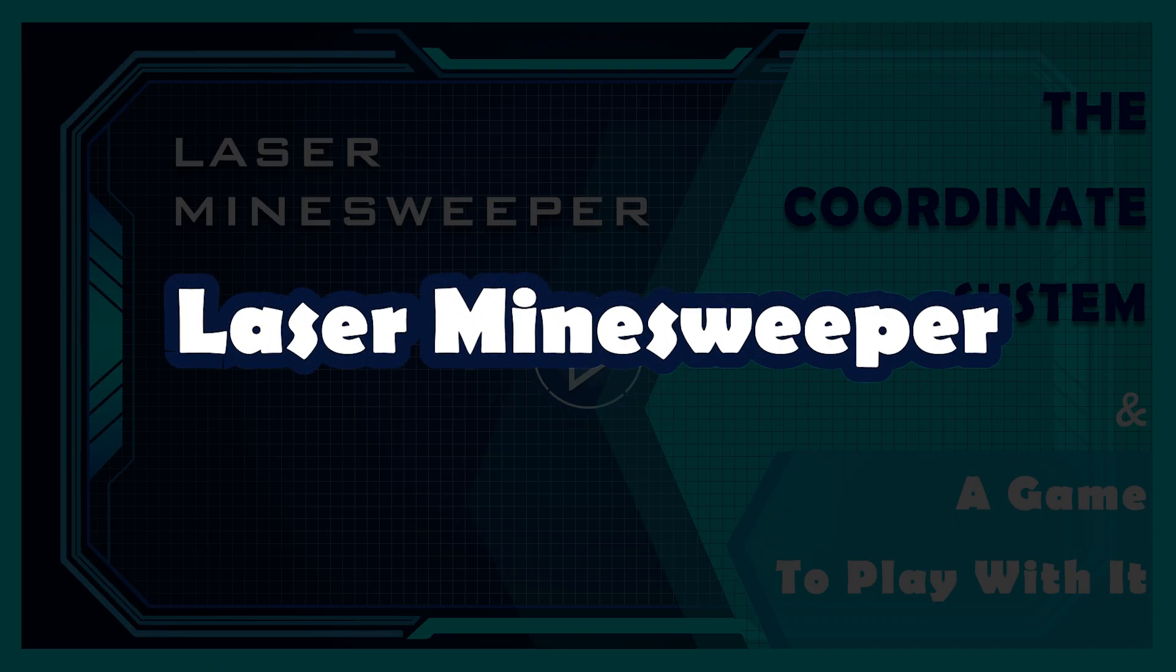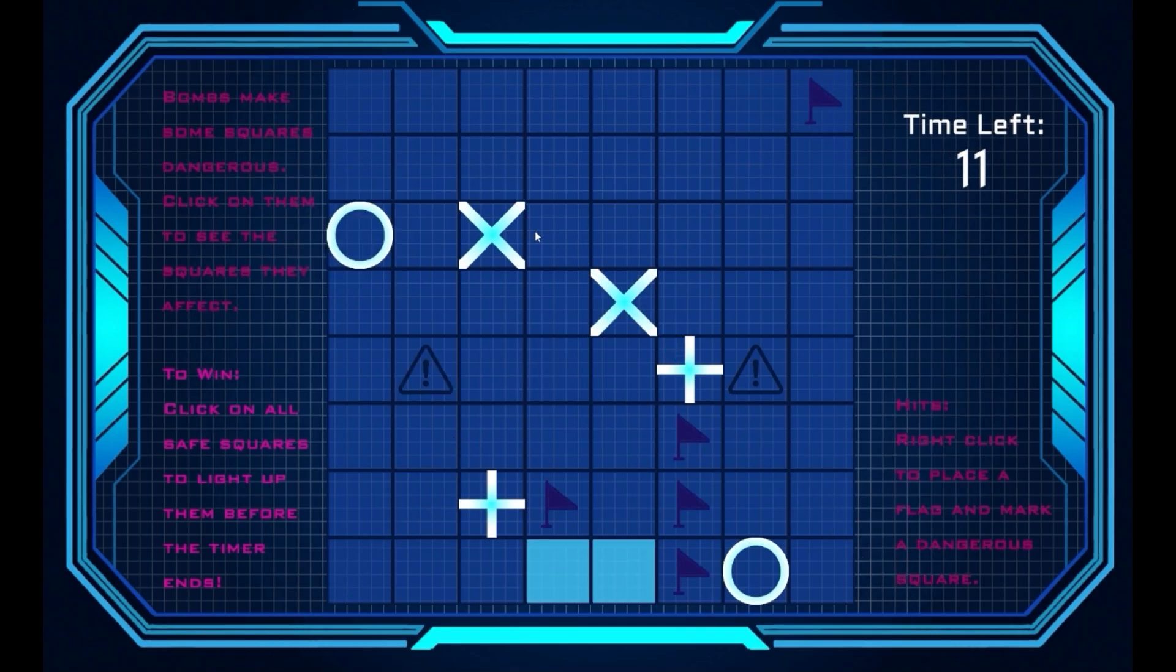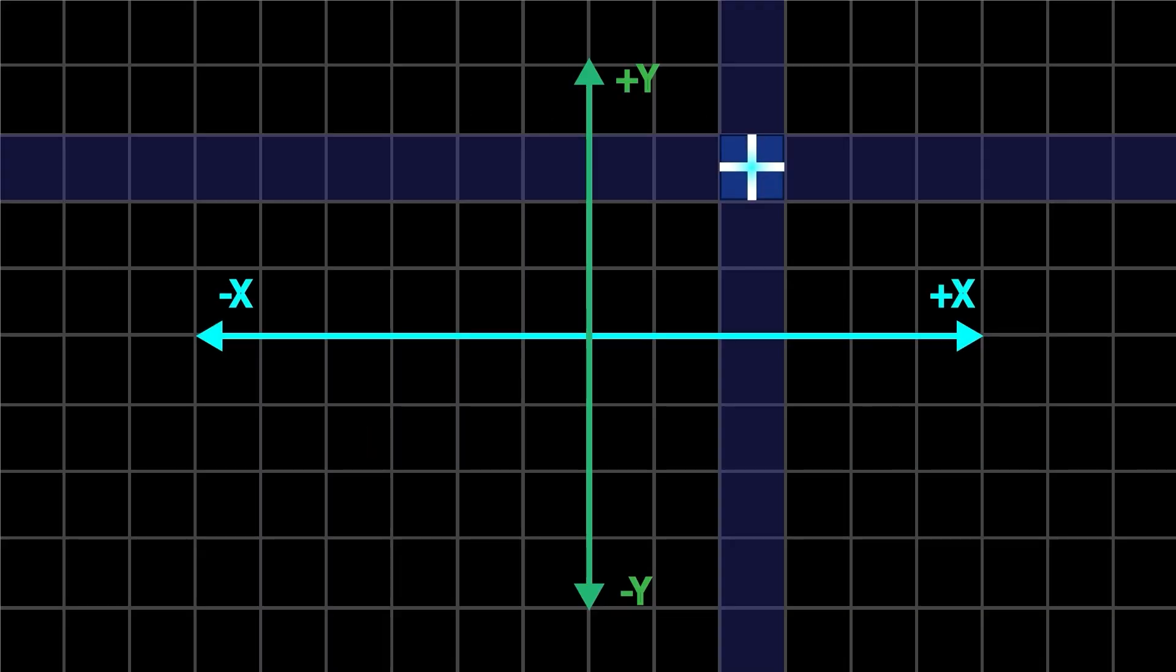Next is lazy minefield. It's minesweeper, but every bomb has a unique mathematical area of effect. You're clearing tiles, planting flags, and dodging these geometrically defined threats. Each bomb follows coordinate geometry rules.